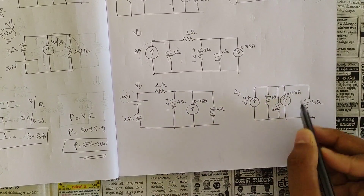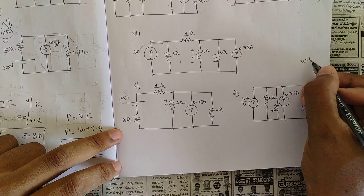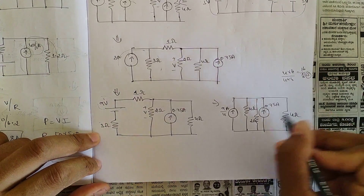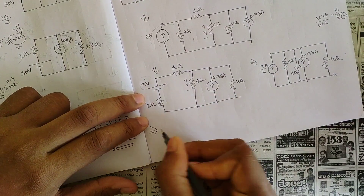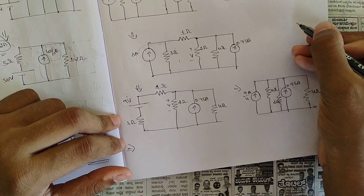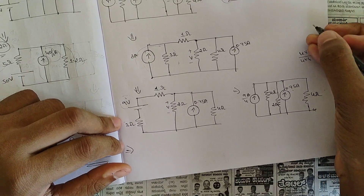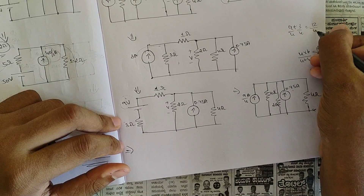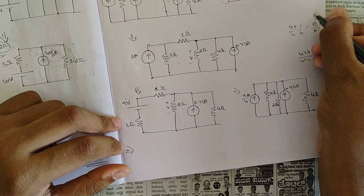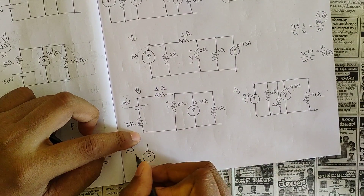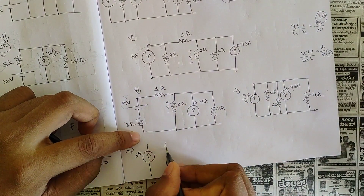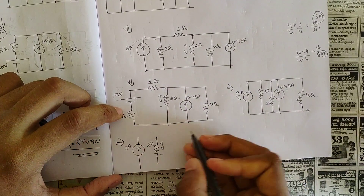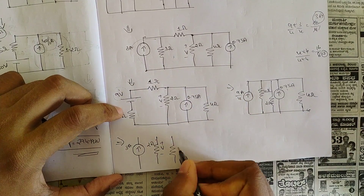9/4 plus 0.75, and 0.75 is equal to 3/4, so 9/4 + 3/4 = 12/4 = 3 amps. So this would now be 3 ampere. This 2 ohm resistance you should not touch — keep it as it is. Then we have the equivalent resistance again 2 ohm.